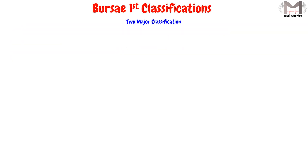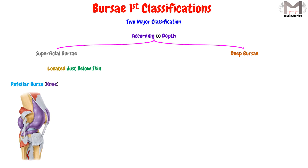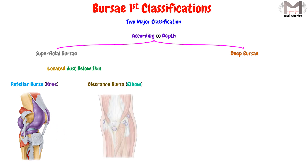We have two major classifications to classify the Bursae. The first classification will classify the Bursae according to its depth into superficial Bursae and deep Bursae. The superficial Bursae will be located just below the skin, such as the Patellar Bursae in the knee and the Olecranon Bursae in the elbow. While the deep Bursae will be located between the bones and the muscles.